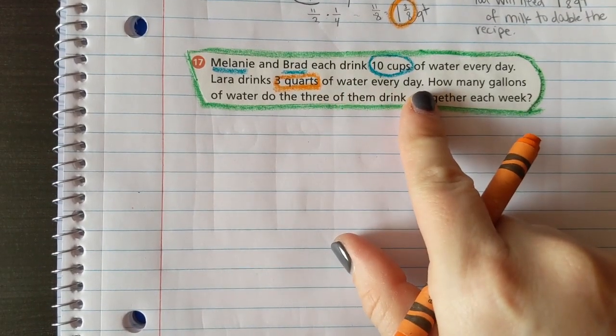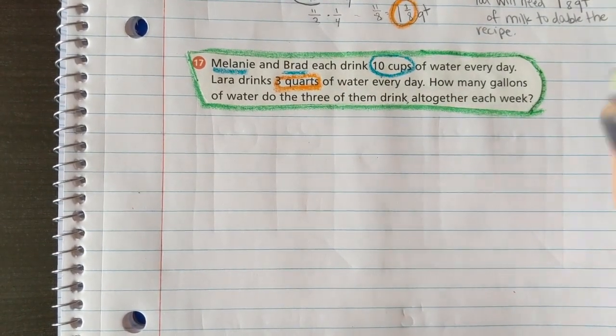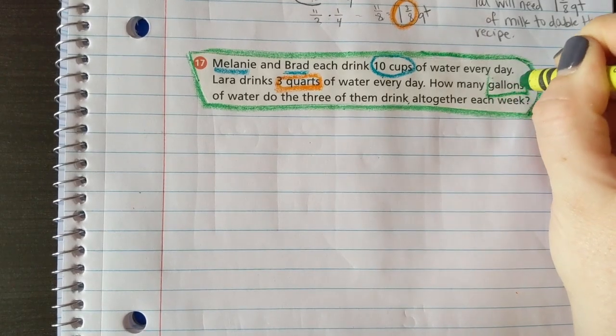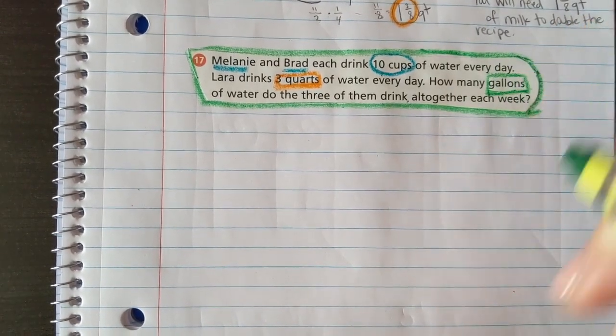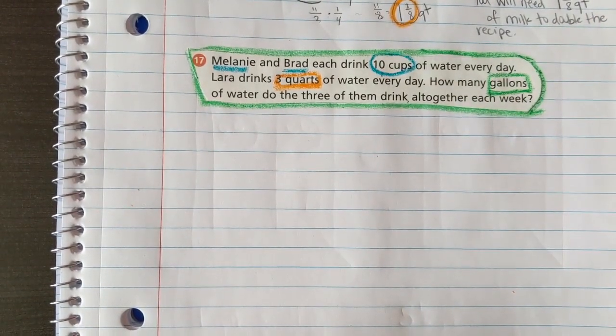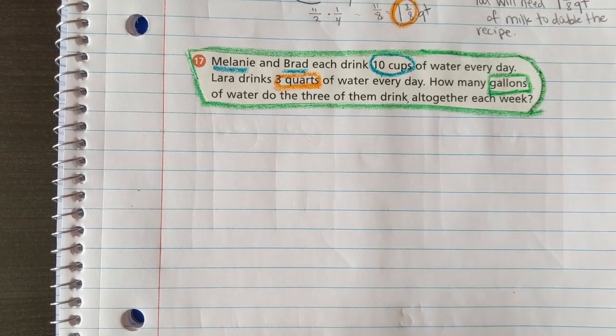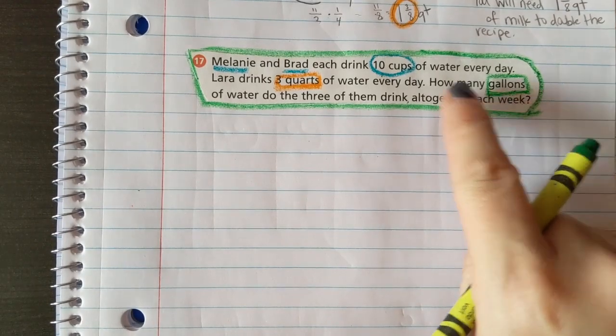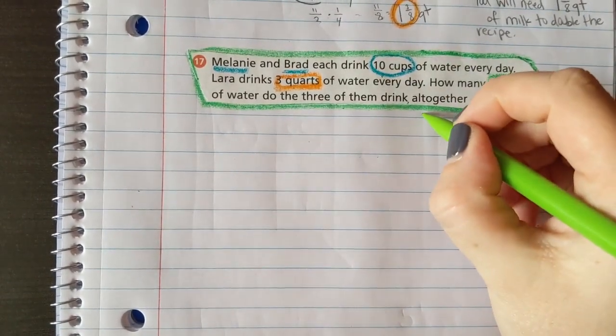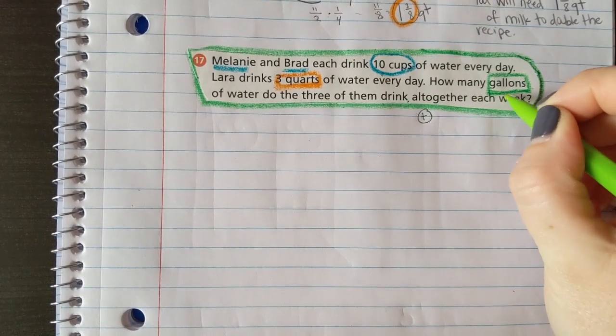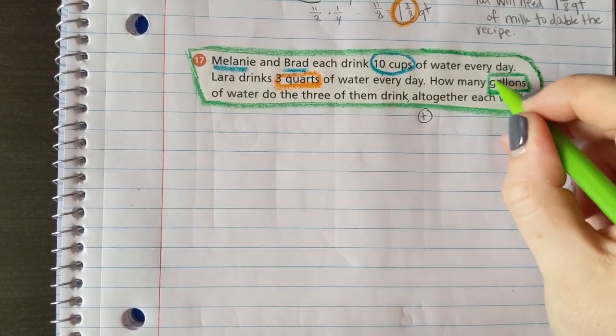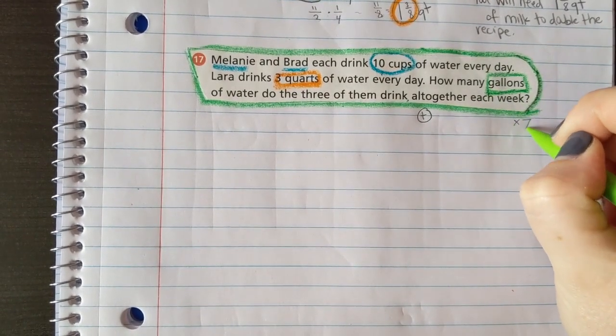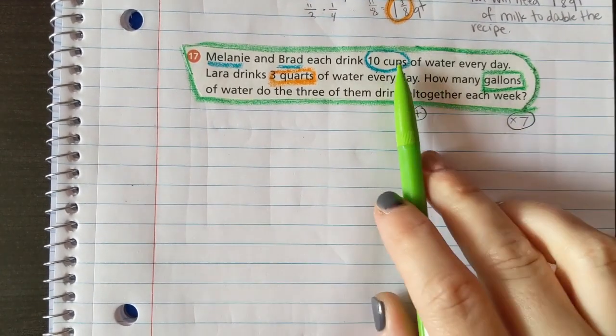Laura drinks three quarts of water every day. How many gallons? Oh my goodness, different measurements - green is gallons. How many gallons of water do the three of them drink all together each week? All of these were given in days, so all together means we'll add. Each week, we're gonna have to find their amount and times it by seven because those are just by day.